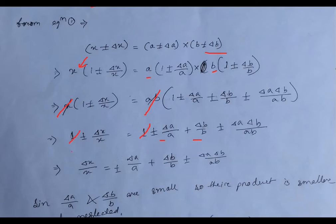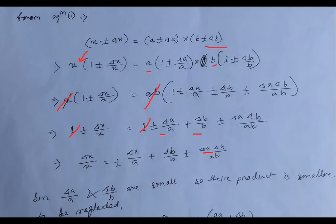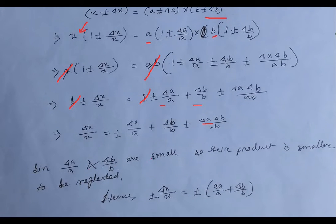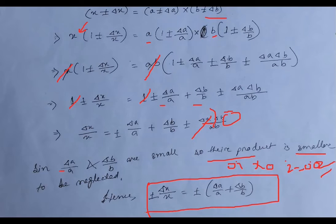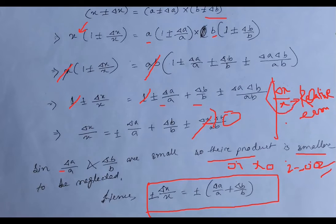After simplification: del x by x equals plus-minus del a by a plus-minus del b by b plus-minus (del a · del b)/(ab). Since del a is a very small quantity, del a by a is even smaller. Similarly del b by b is even smaller. When two small quantities are multiplied they become even smaller — for example 0.1 times 0.2 gives 0.02. So we neglect the (del a · del b)/(ab) term. Therefore del x by x equals plus-minus del a by a plus-minus del b by b. The relative error in x equals the relative error in a plus the relative error in b.